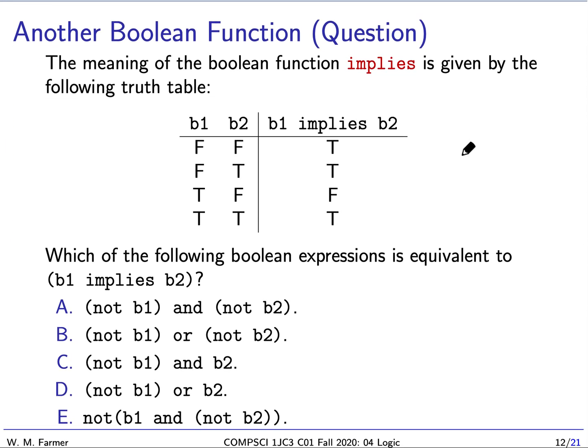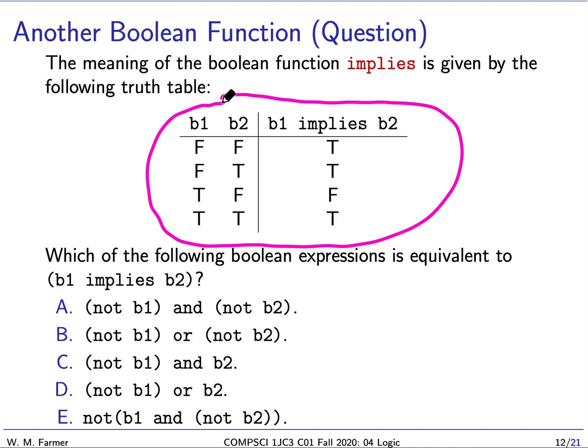There is another very useful Boolean function called implies, given by its truth table. For implies, if the first argument is false, we get true in both cases. If the first argument is true, we get false when the second argument is false, and true when the second argument is true. So the only way an implication is false is if the first argument is true and the second argument is false.